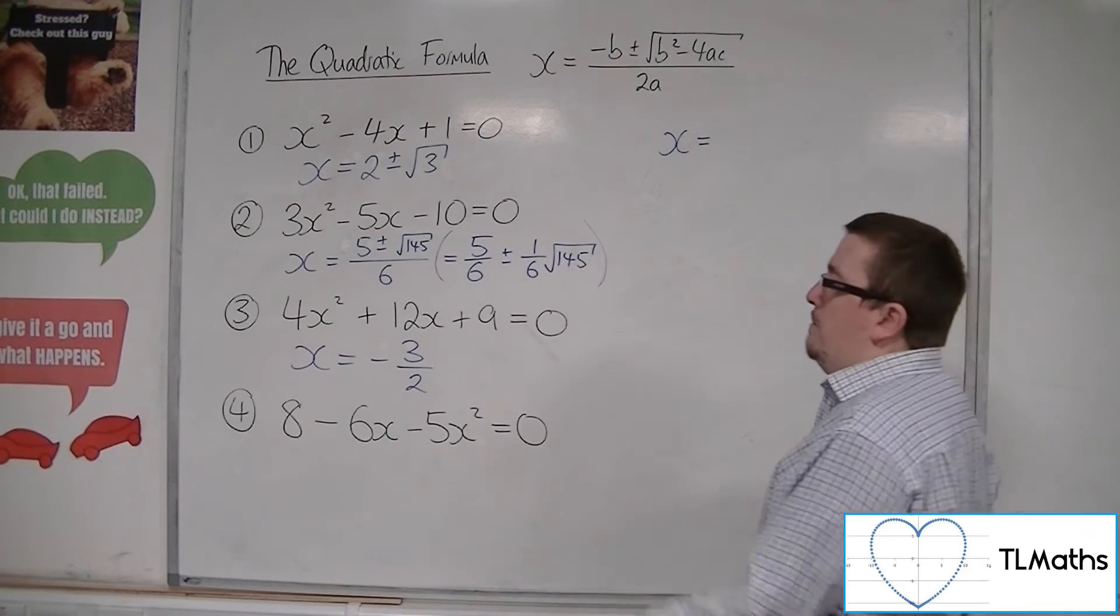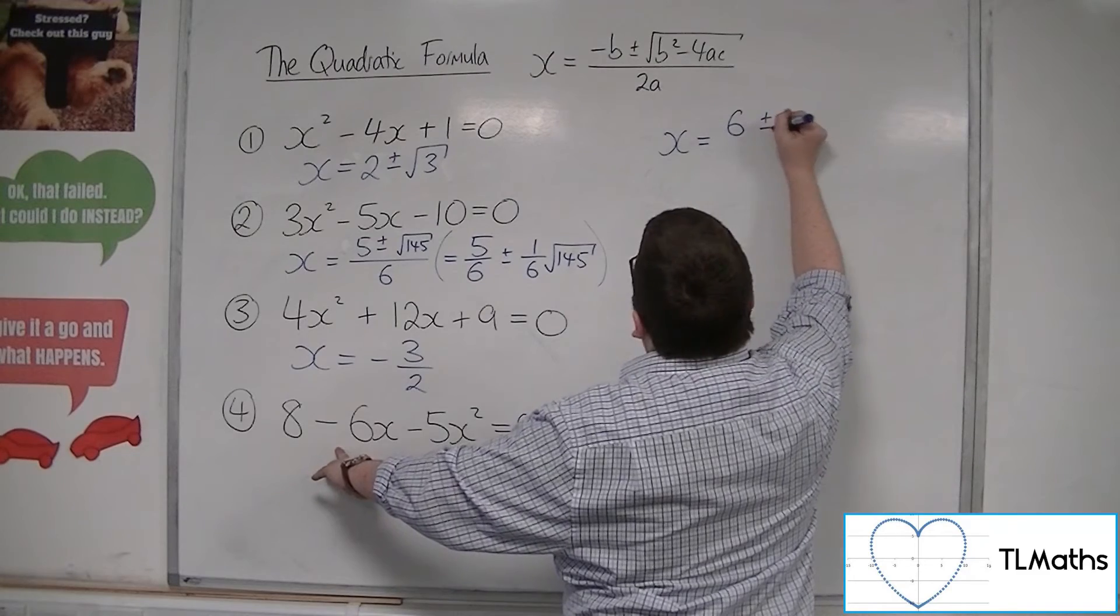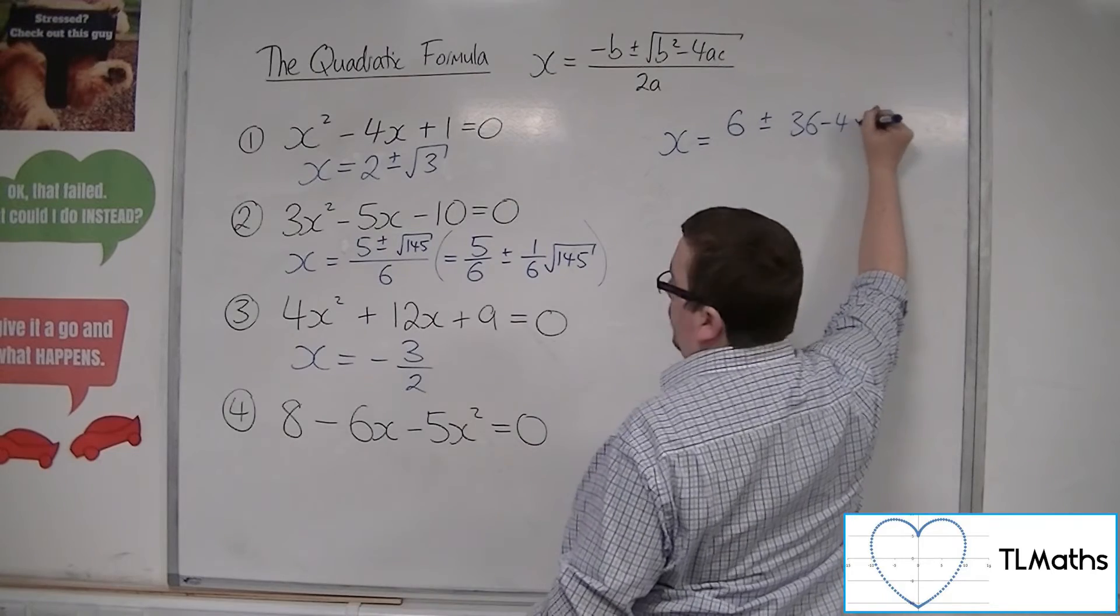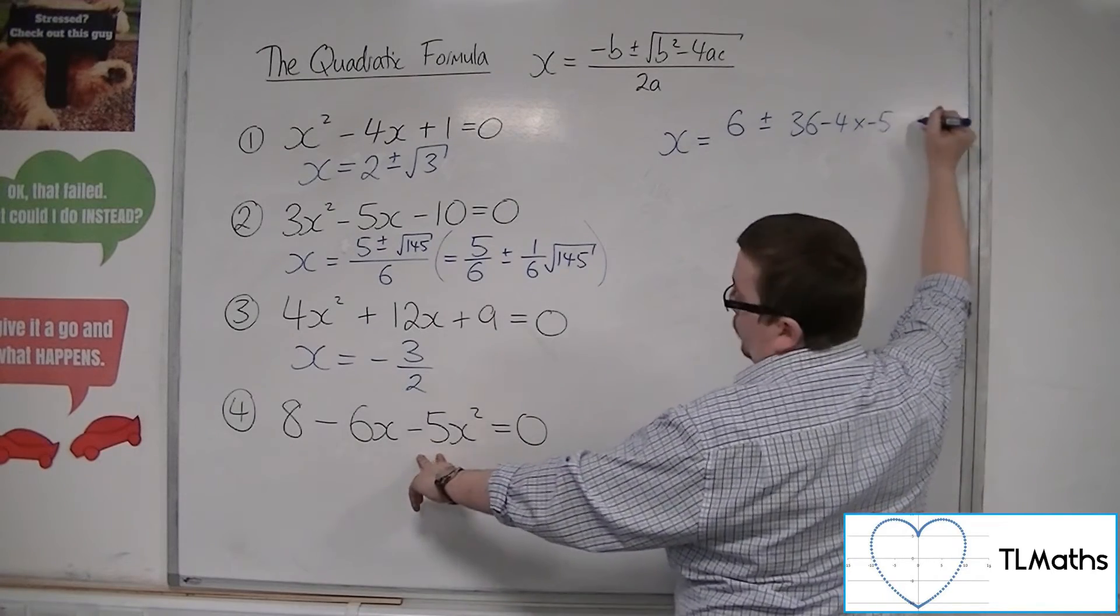So x is equal to minus b, so positive 6, plus or minus b squared, so 36, take away 4, times a, now a is the minus 5, the coefficient of x squared.